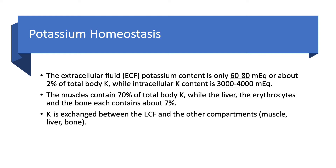Extracellular potassium is only 60 to 80 milliequivalents of total body potassium — only about 2%. The remaining 98% is intracellular, representing 3,000 to 4,000 millimoles. The muscles contain the largest amount of potassium in the body, about 70%. Liver, erythrocytes (red blood cells), and bone each contain about 7%. Obviously, when we have muscle damage like rhabdomyolysis, a lot of potassium is released, which will cause hyperkalemia. Potassium is exchanged between the extracellular and other compartments such as muscle, liver, and bone.